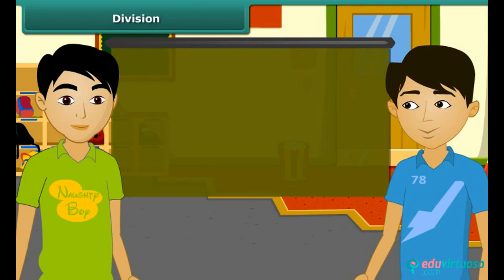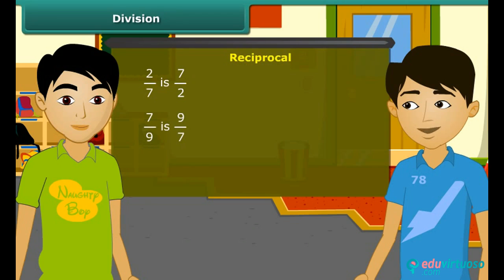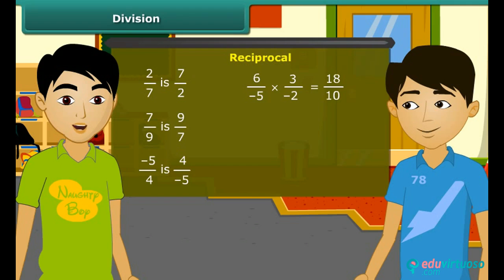Well done! Before starting about division, I will tell you about reciprocals. What are reciprocals? The reciprocal of 2 by 7 is 7 by 2. The reciprocal of 7 by 9 is 9 by 7. I got it — the reciprocal of minus 5 by 4 is 4 by minus 5. Correct! So when we divide one rational number by another rational number, we multiply the rational number with the reciprocal of the other number.